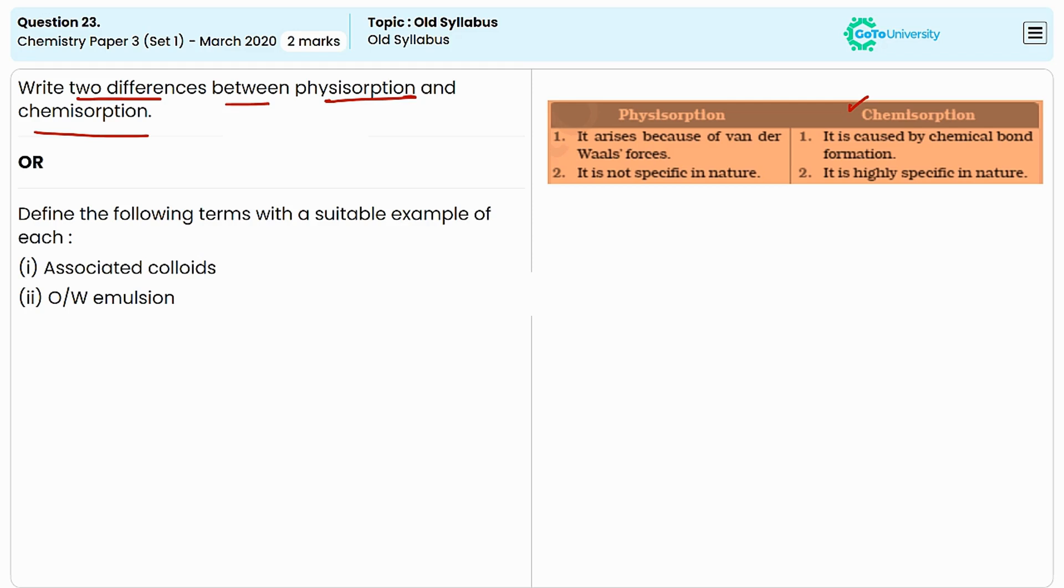In terms of heat of adsorption, it is high, typically more than 80 kJ per mole. Regarding reversibility, chemisorption is less reversible as breaking chemical bonds requires significant energy. Temperature-wise, it is favored at higher temperatures.